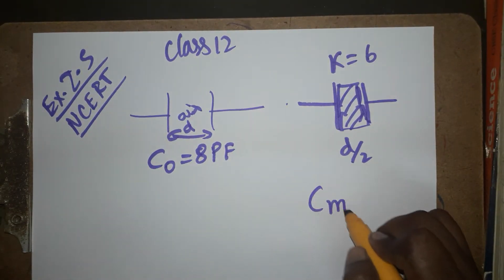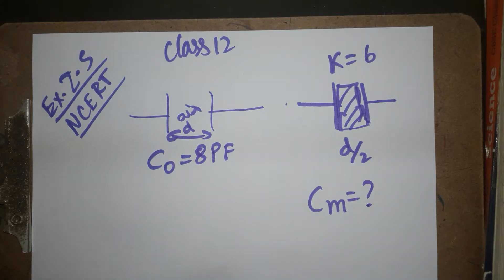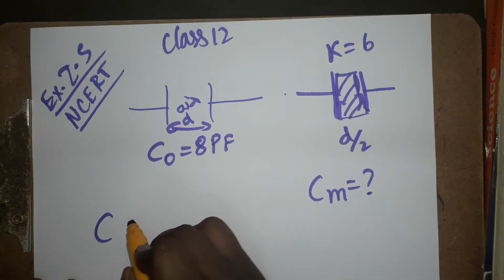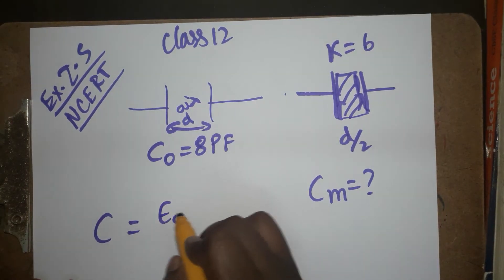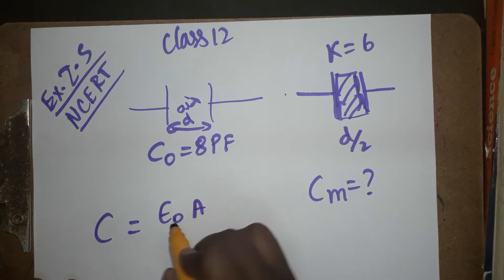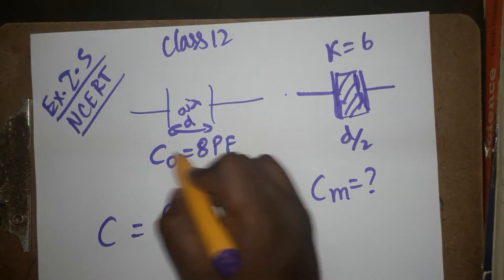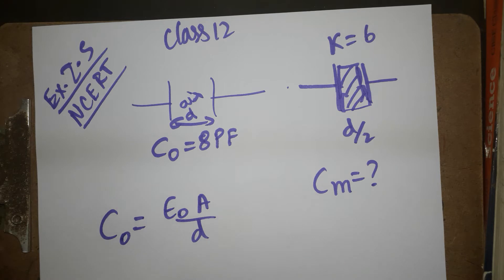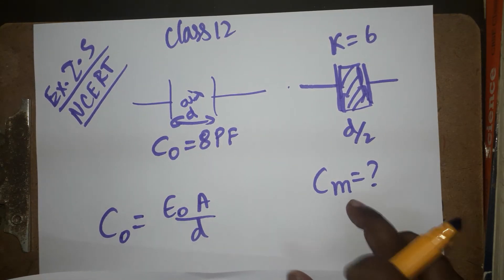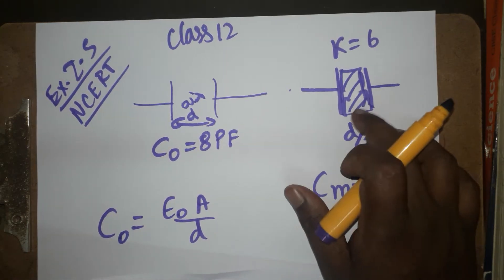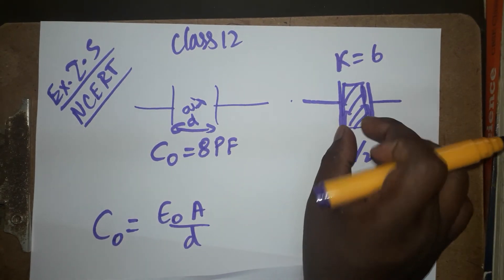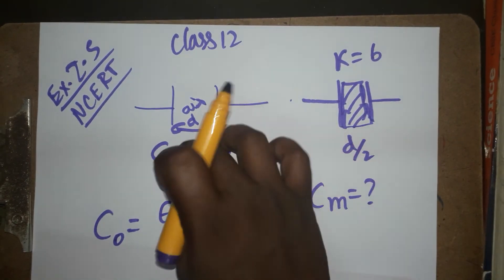The question asks: what is the capacitance of the capacitor in the medium? As we know, the capacitance of a capacitor is equal to epsilon times A divided by d. Since the first case is in air medium, we now need to find the capacitance when a dielectric medium is placed and the distance is reduced to half.